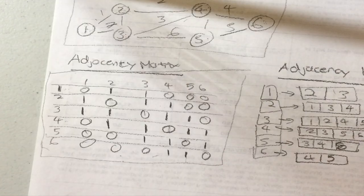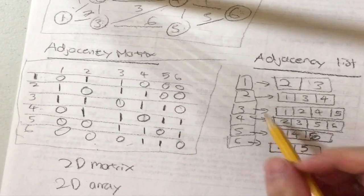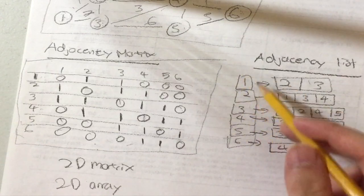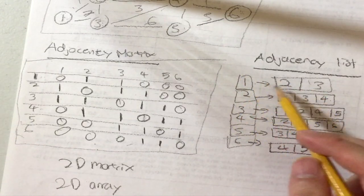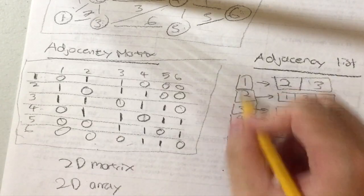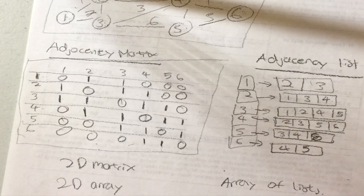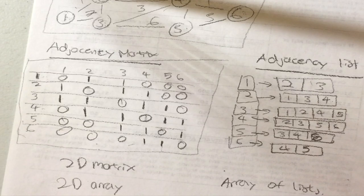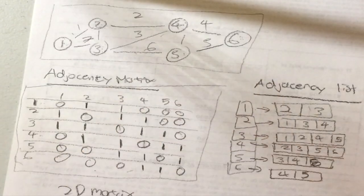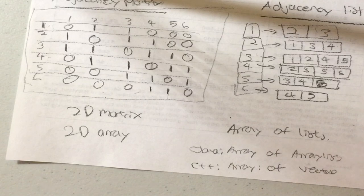So those are the two ways of representing a graph in code. For the adjacency matrix, you use a 2D array. For the adjacency list, you have an array of all the vertex names, each associated with a list of neighbors — it could be a linked list or another array. In Java you'd use an array of ArrayLists; in C++ you'd use an array of vectors. Hope you guys enjoyed this quick video — rate, comment, subscribe, I'll check you guys later, peace.